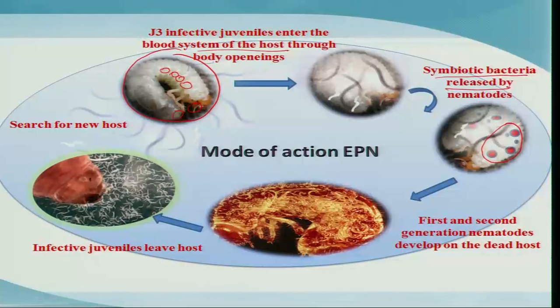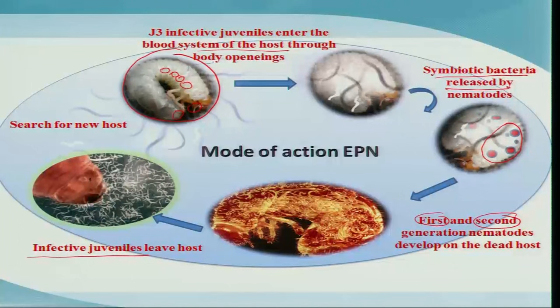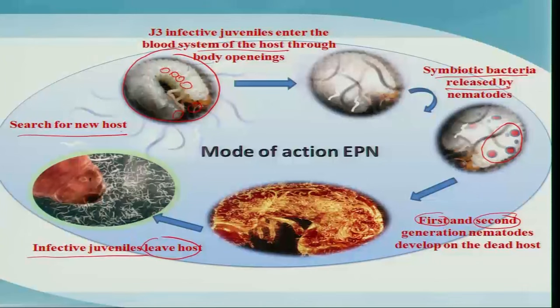Once the host is dead, the nematode begins multiplying, completing the first or second generation depending on the size of the host. They continue to mass multiply, and once the host's food is exhausted, infective juveniles are produced. These juveniles carry the bacteria in their gut and leave the host. So from just a few nematodes that killed the host, millions of infective juveniles emerge in search of new insects.